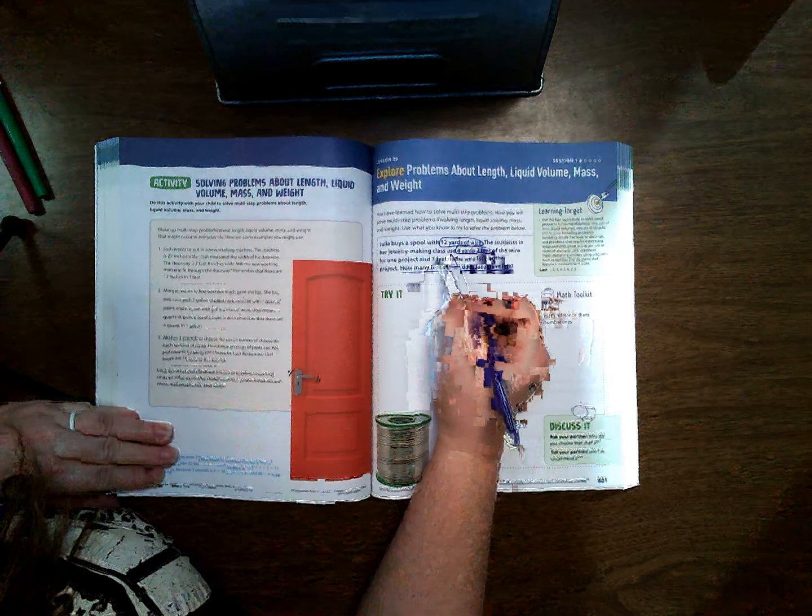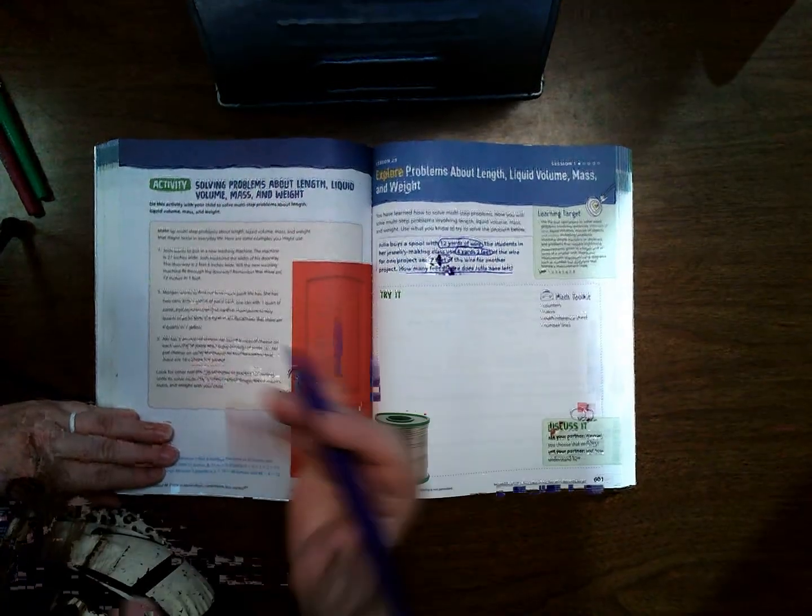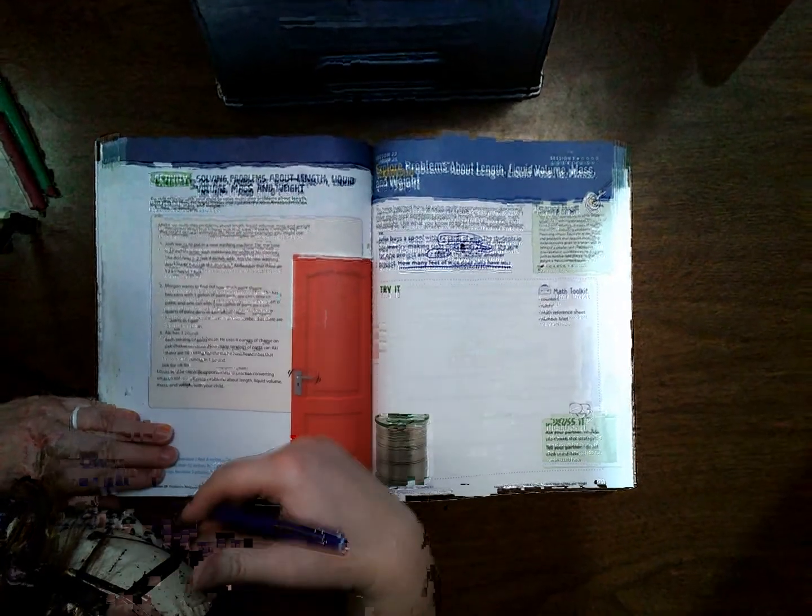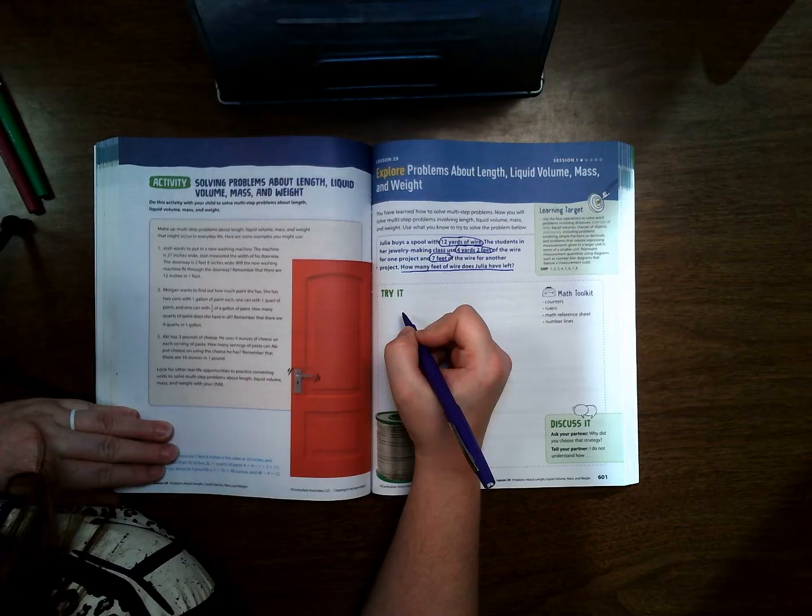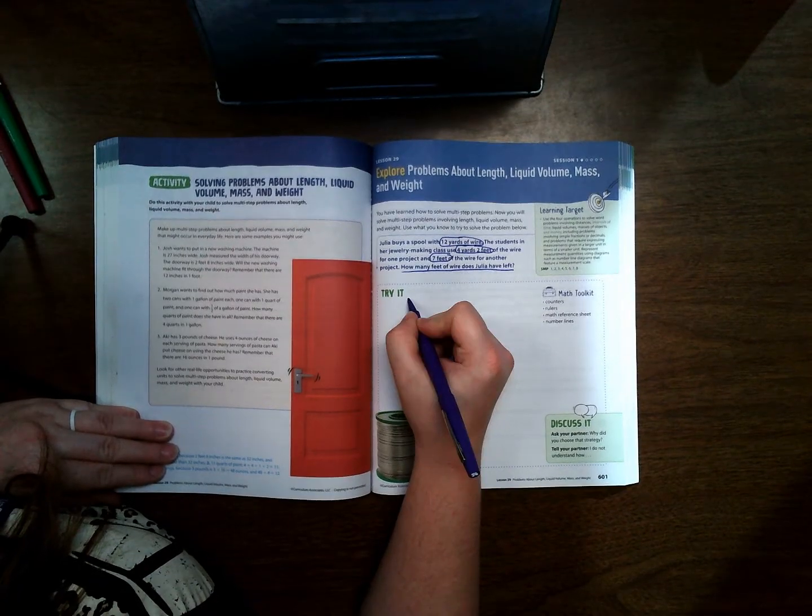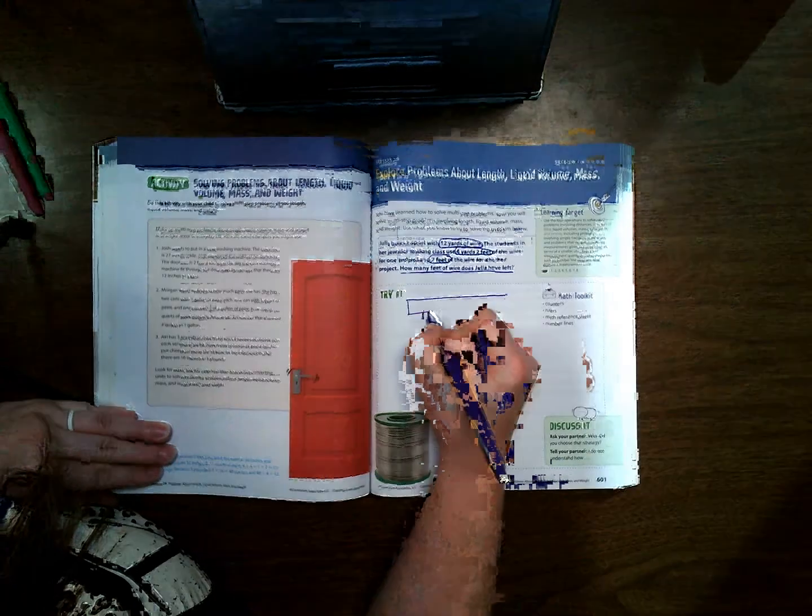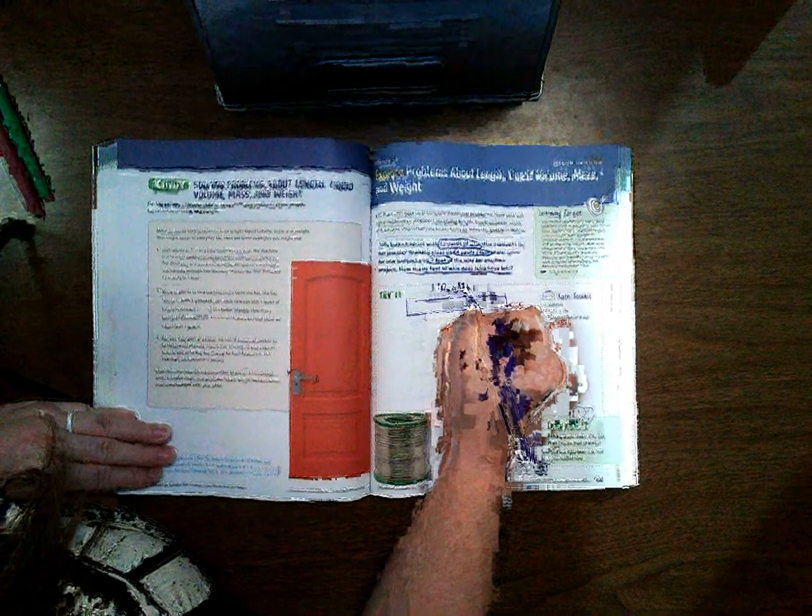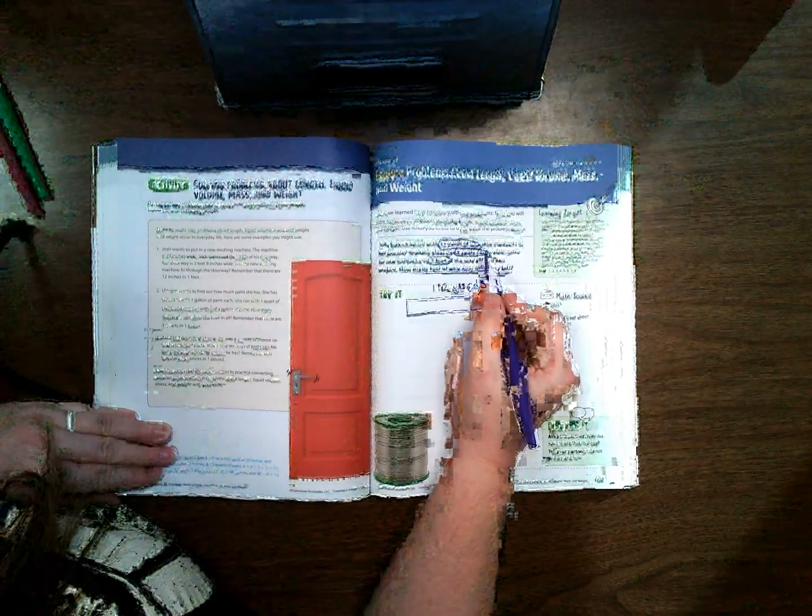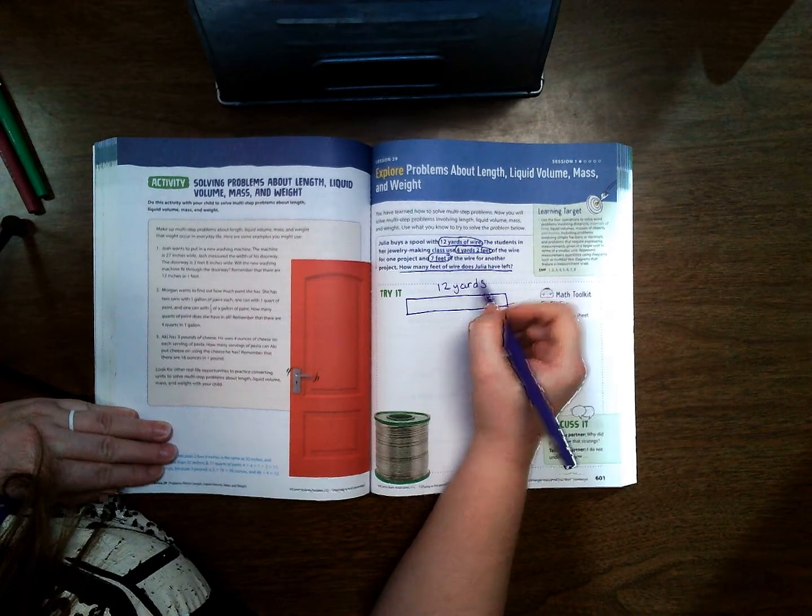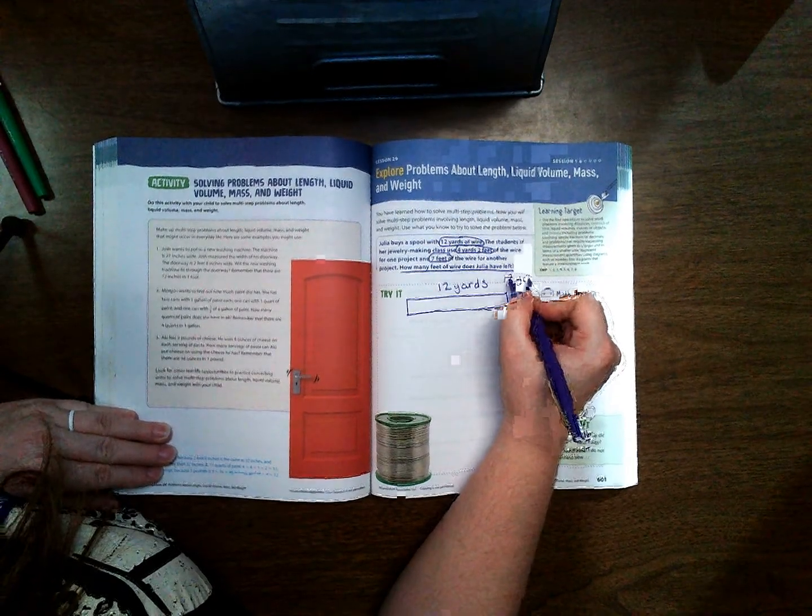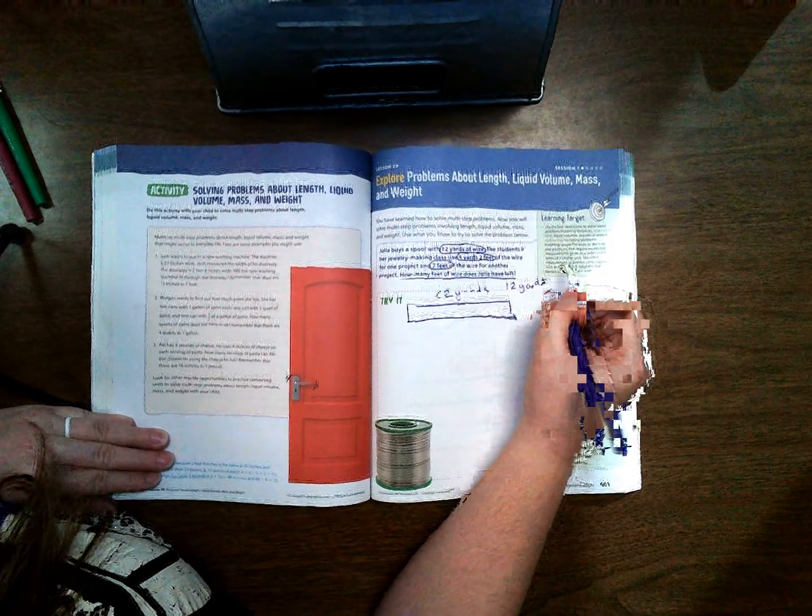Anytime we are using measurements, it's always easiest to go to the smallest. Since we see that we have yards and feet, feet is obviously our smallest measurement. So let's make our bar model. 12 yards is what we have, but again we said we're going to the smaller measurement, so we need to figure out how many feet are in 12 yards.